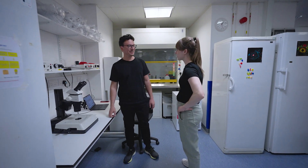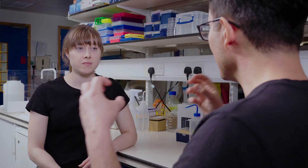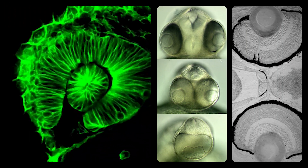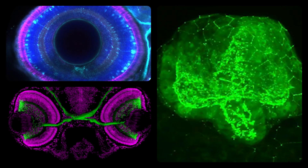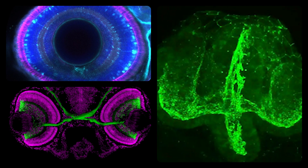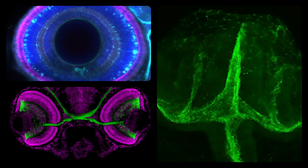The eyes initially develop from a single group of cells that come from the same region where the brain develops, but this group of cells will bud laterally and form left and right eyes. Later, the eyes undergo extensive cell rearrangements and foldings to form the neural retina and the retinal pigmented epithelia. The neural retina will have all the neurons that enable sight, while the retinal pigmented epithelia, or RPE, will give shape to the eye and provide the physiological cues to sustain the cells in the neural retina.